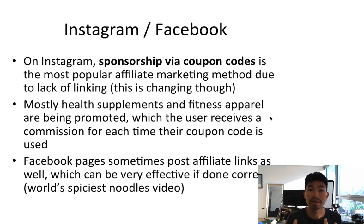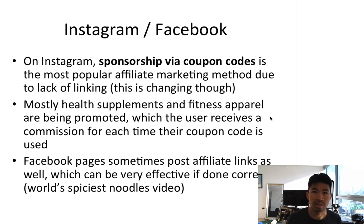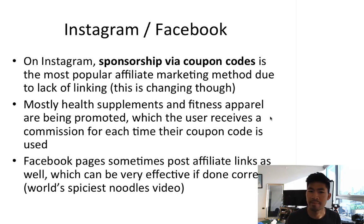Moving on to Instagram and Facebook. On Instagram, sponsorship via coupon codes is the most popular affiliate marketing method due to the lack of linking. This is changing though, because the swipe-up feature on Instagram Stories is a game changer — it allows large Instagram users to link directly, rather than only being able to put a link in your bio. Links still aren't clickable in post descriptions. Instagram could be a very effective affiliate marketing platform if used correctly, so keep an eye on this.